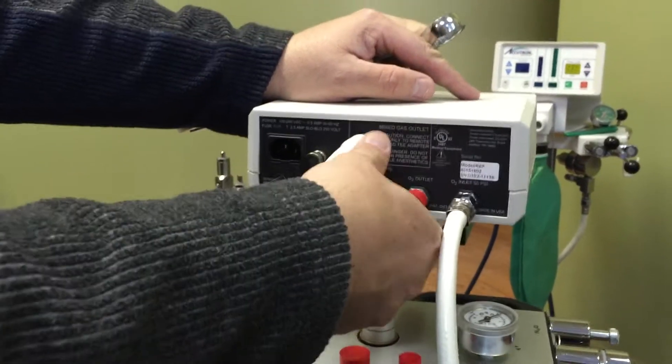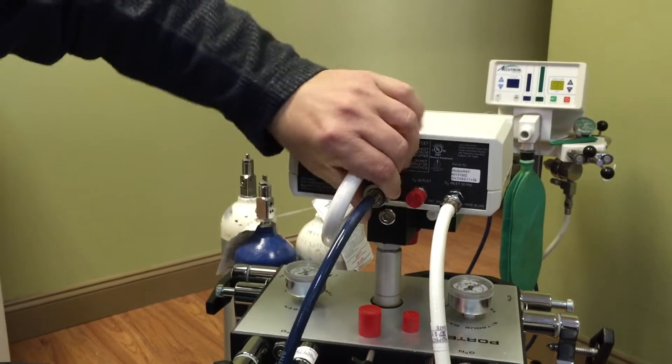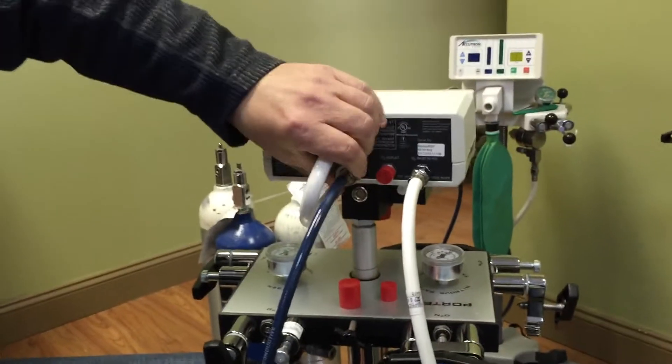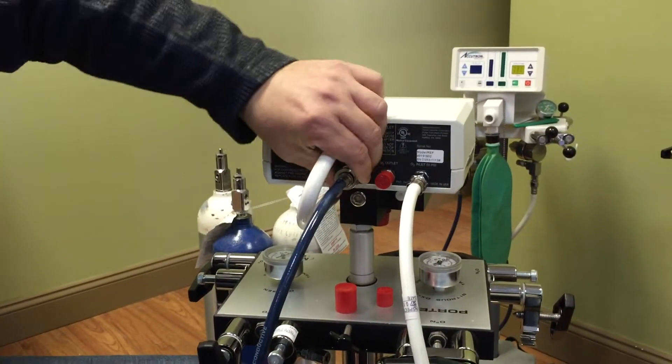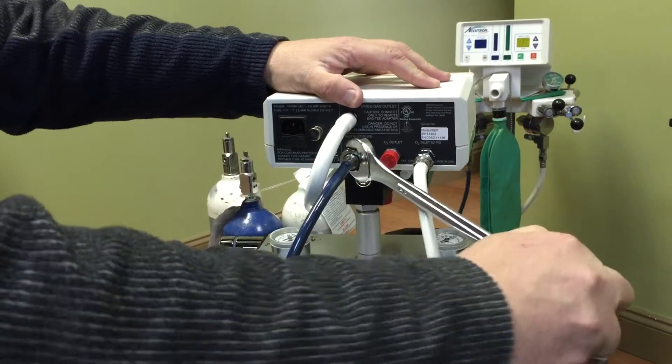And again, this one just screws on. You can hand screw it on there. Once she's tight, just snug it up with a little key. It's going to be a 7-8 key. Go on there, snug it up. That's it.